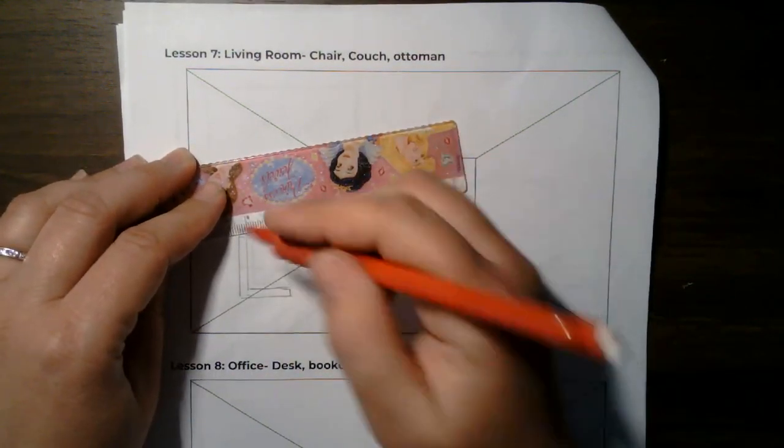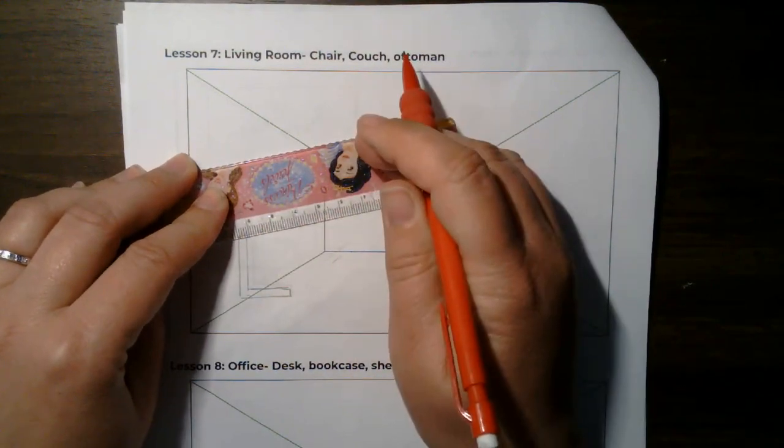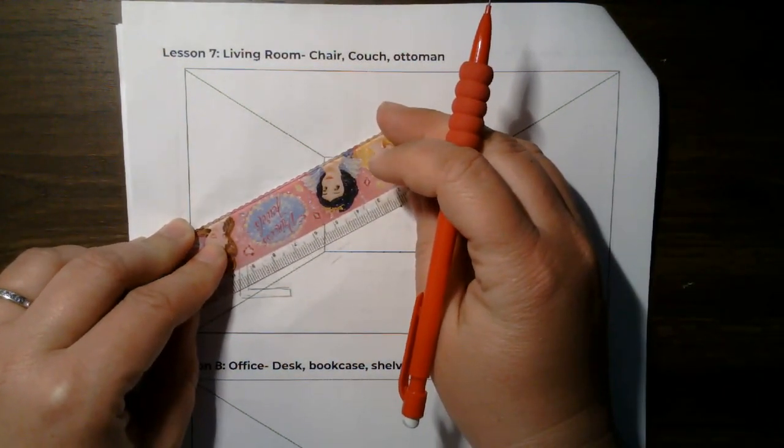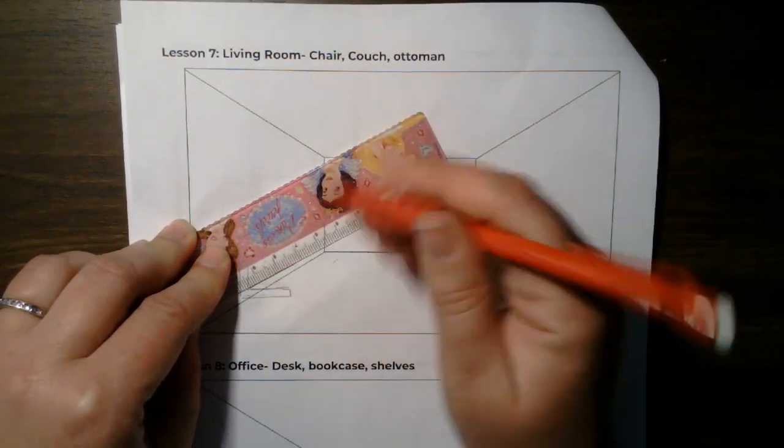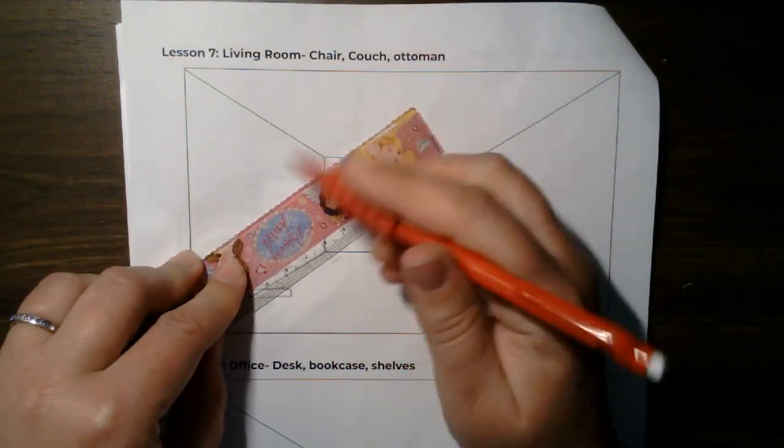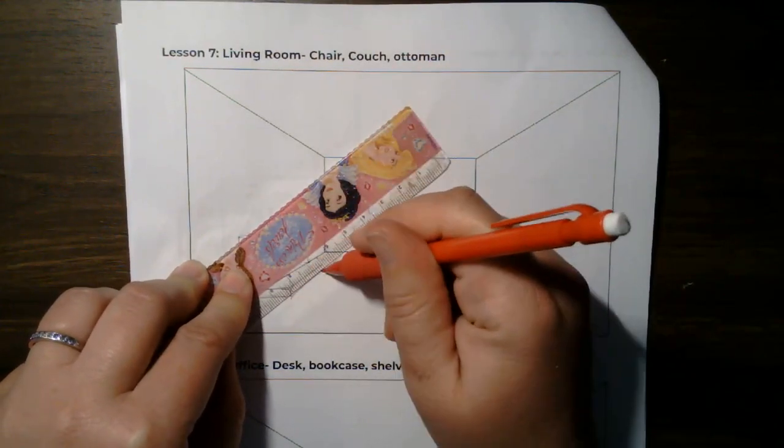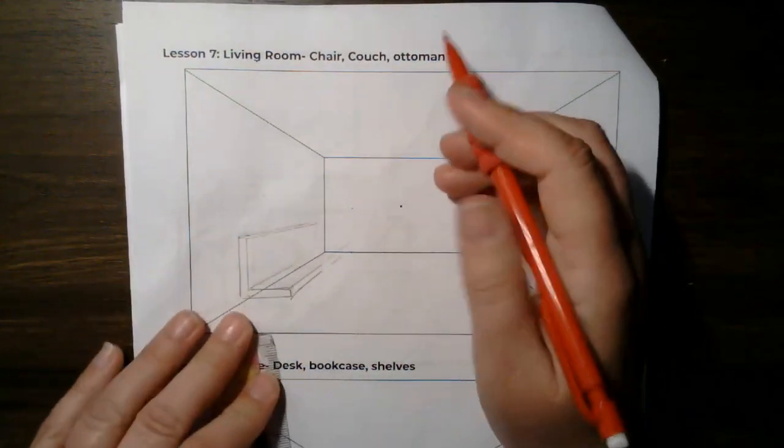So now we're going to go through and we're going to connect it to the vanishing point. You're probably noticing that I am not drawing everything all the way to the vanishing point. I already know that I have to erase, so it's not an issue because I know I'm connecting.